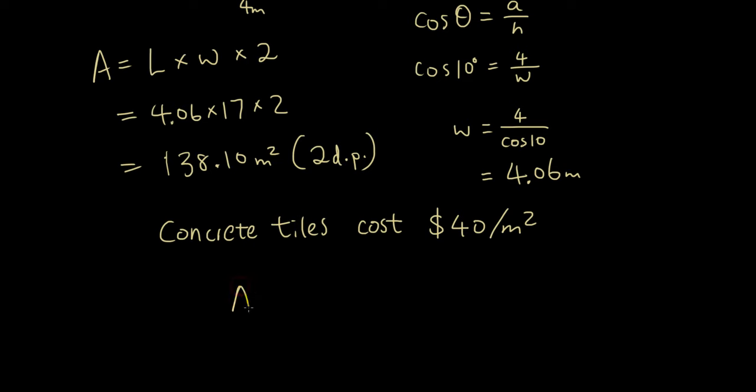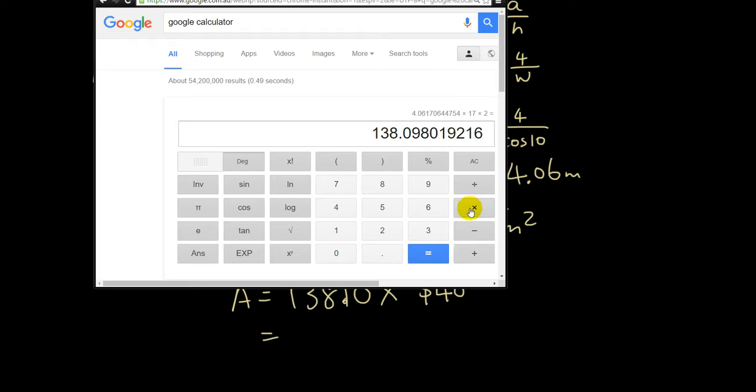Then you would go area equals 138.10 times $40, and the answer is $5,523.92.